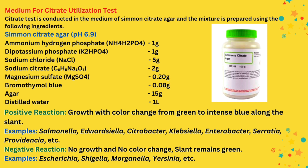For examples: a positive reaction shows a green to blue color change. Citrate-positive bacteria include Salmonella, Edwardsiella, Citrobacter, Klebsiella, Enterobacter, Serratia, and Providencia. A negative reaction shows no color change, meaning the medium remains green. Citrate-negative bacteria include Escherichia coli, Shigella, Morganella, and Yersinia.